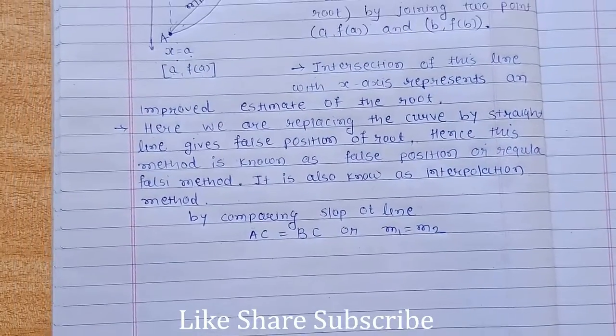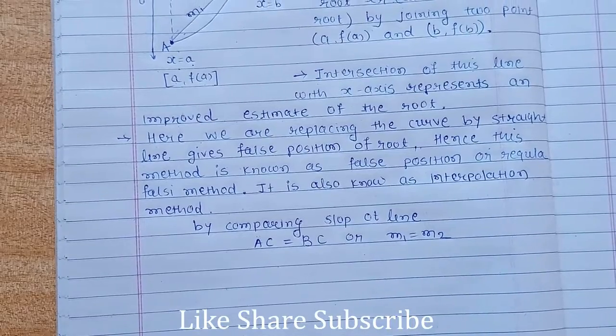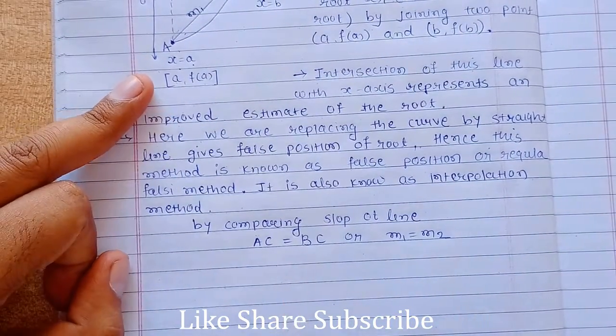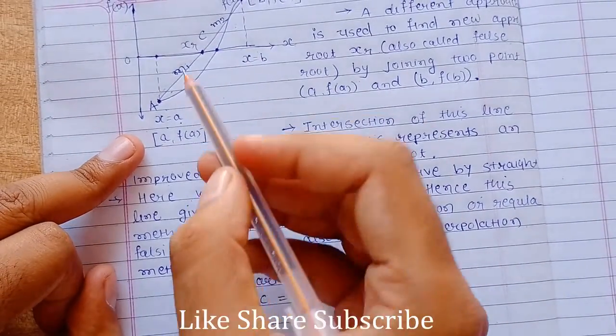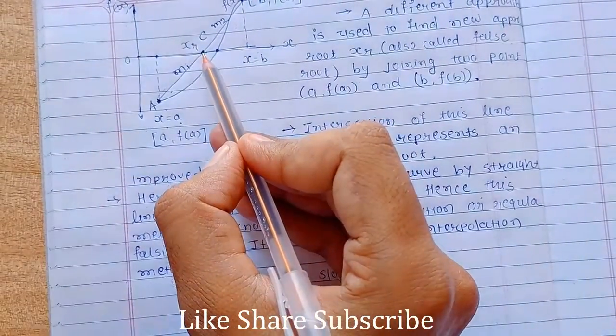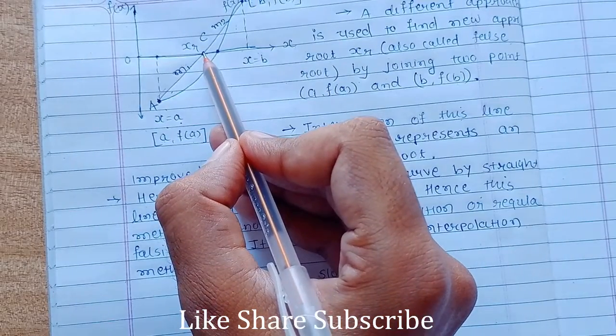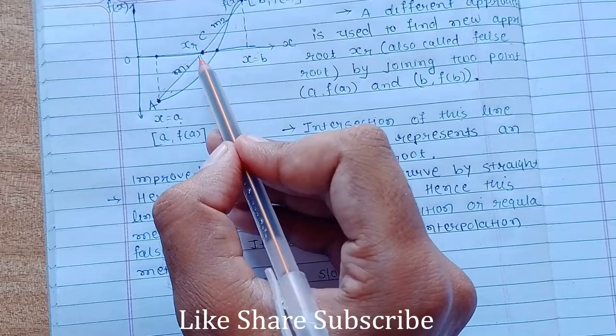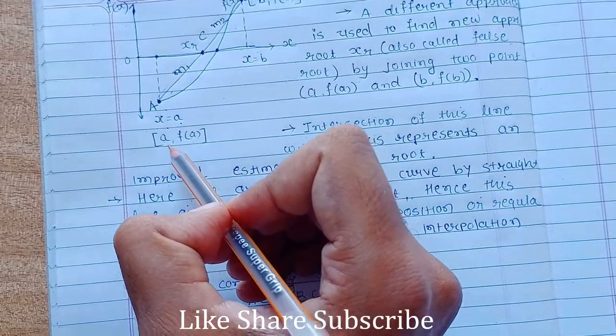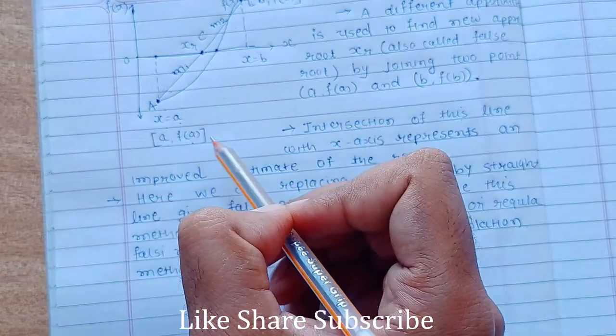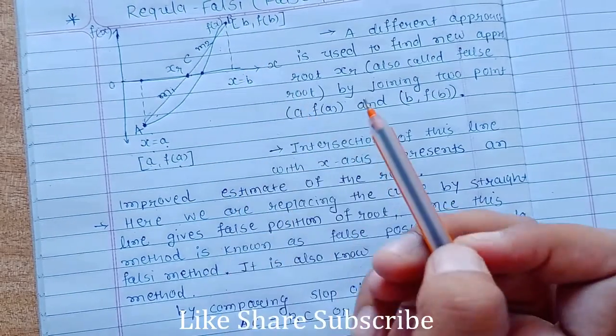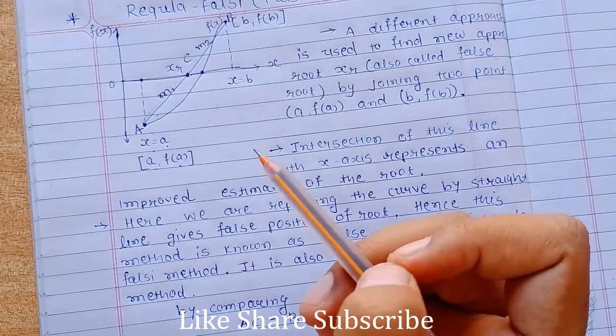Now we know the definition of slope. Slope is nothing but y2 minus y1 divided by x2 minus x1. So here in this case, this point has x-coordinate equal to xr and y-coordinate is 0, since it is lying on the x-axis. This point's x-coordinate is a, y-coordinate f of a, and this point's x-coordinate is b, y-coordinate is f of b. So for line AC,